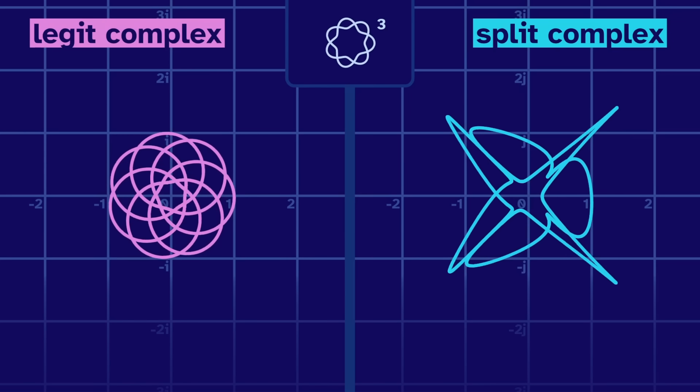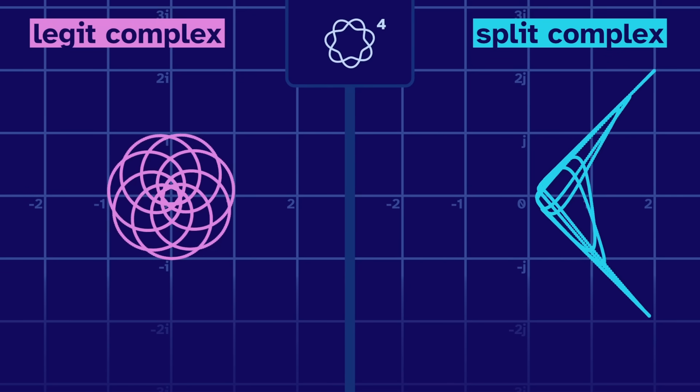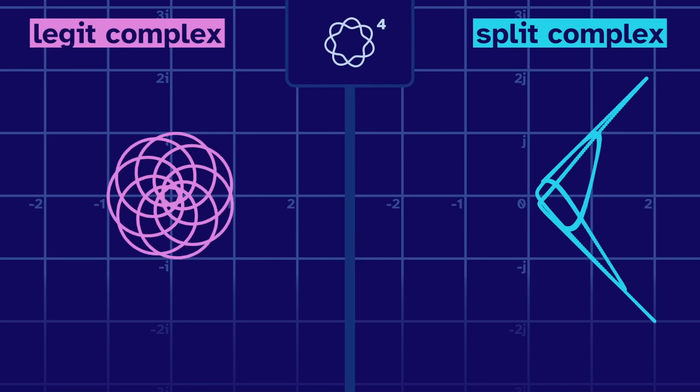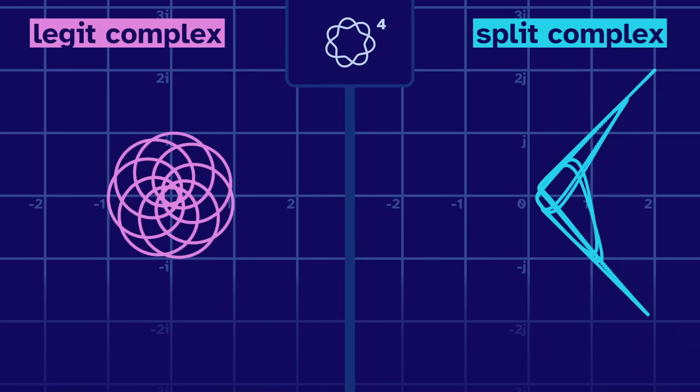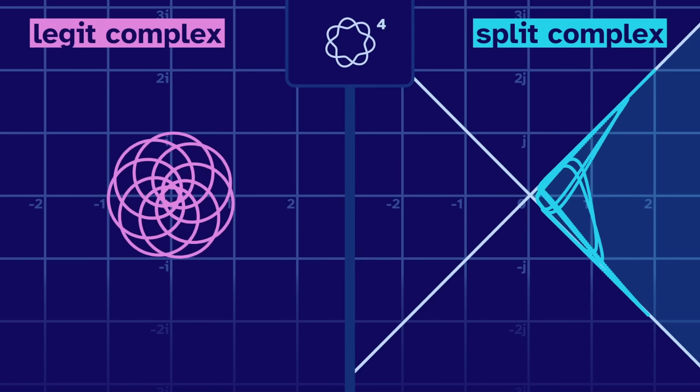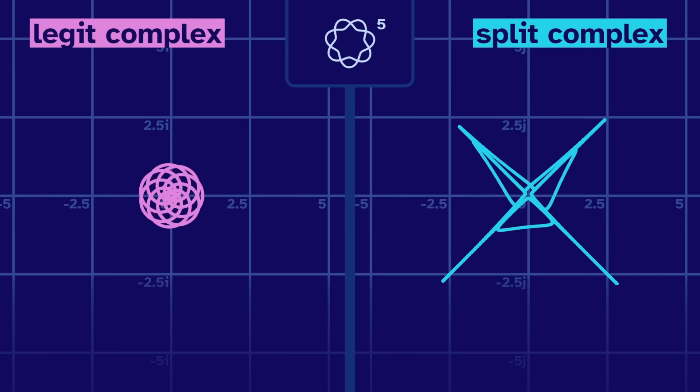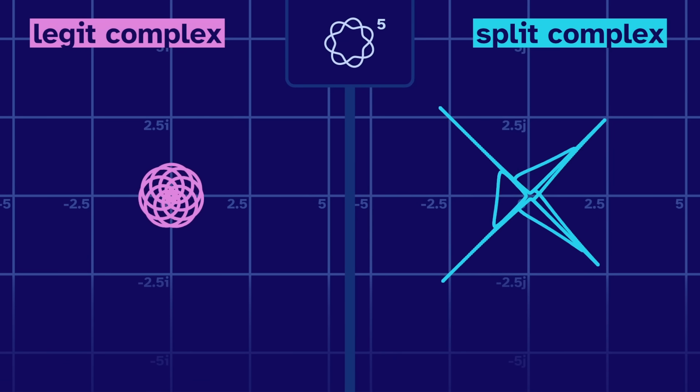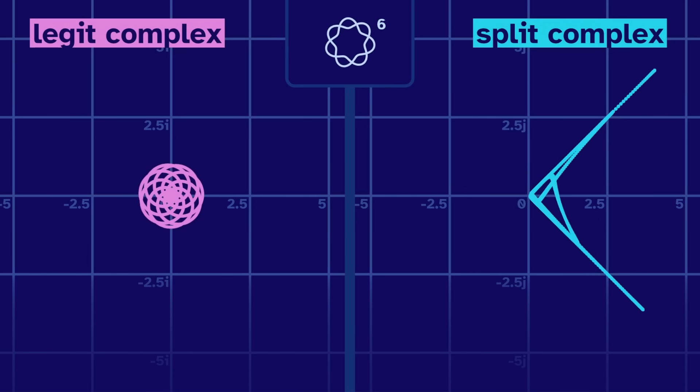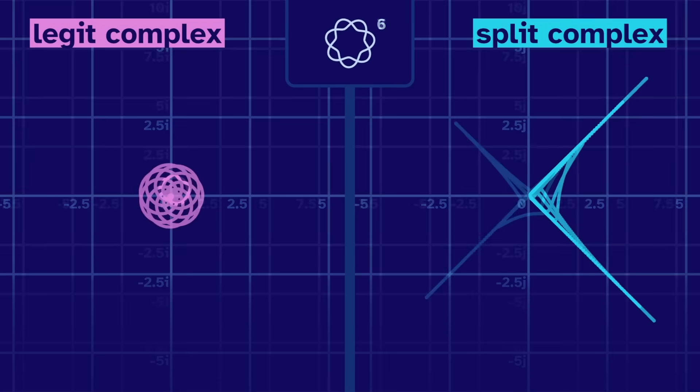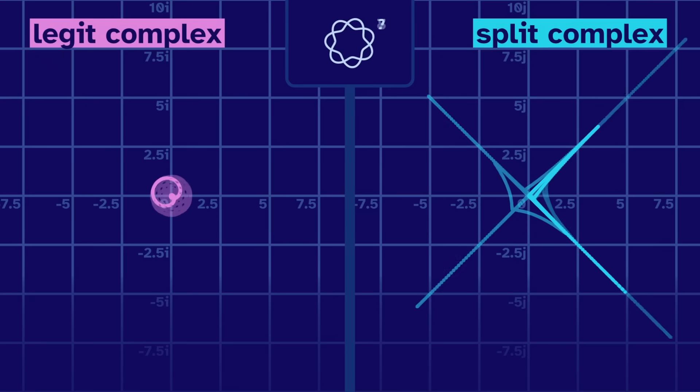We see something similar with the fourth power, but it's just the right half of an x. Any even power is also a square, so it has to be in this section. But the fifth power is odd, so it makes a full x. Then the sixth power makes a x, and the seventh is an x, and the eighth is a x. This pattern continues.